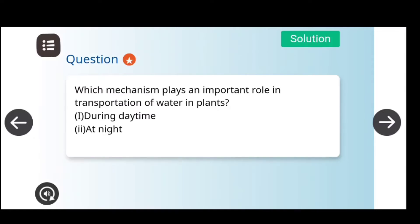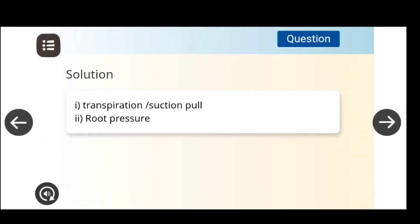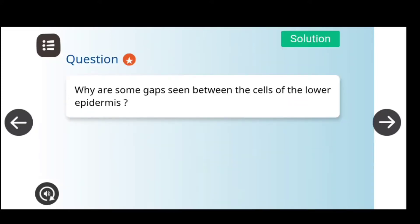Which mechanism plays an important role in transportation of water in plants during daytime and at night times? The solution is transpiration and root pressure. Suction will also be there.